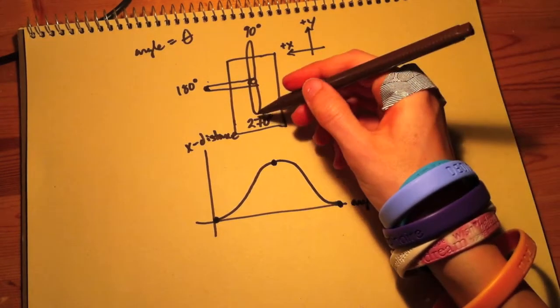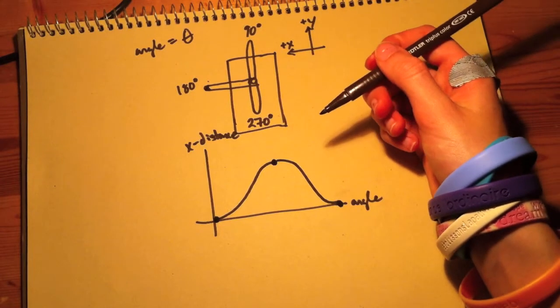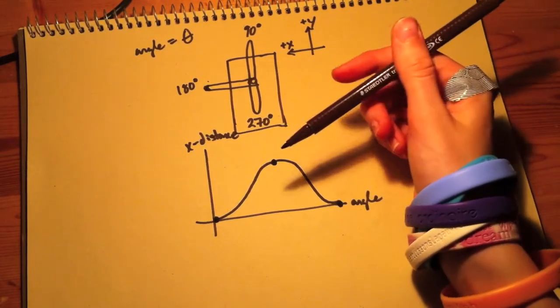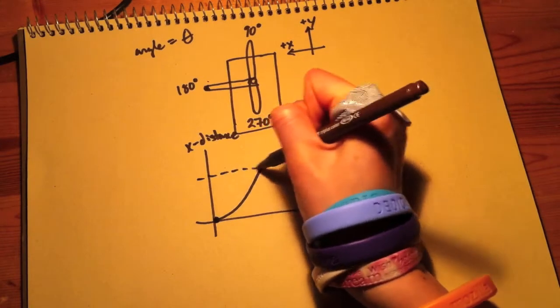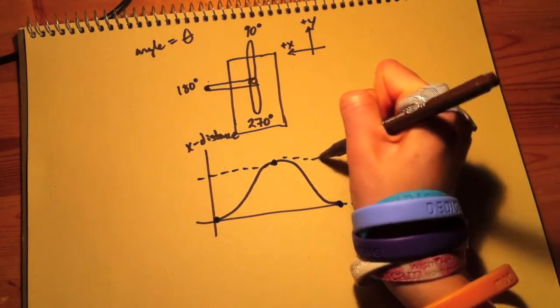So what this actually is, is just a sine function. The beak is pushed open when the x-distance is at its greatest, so right there.